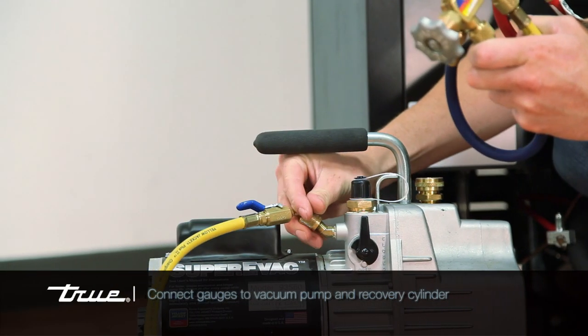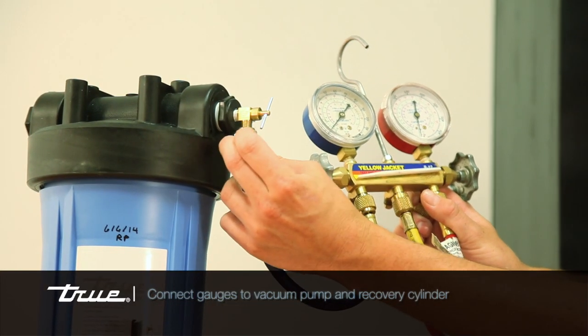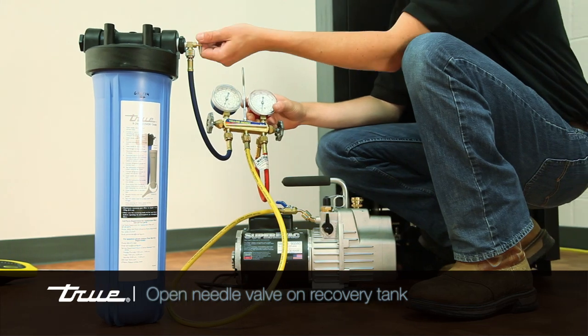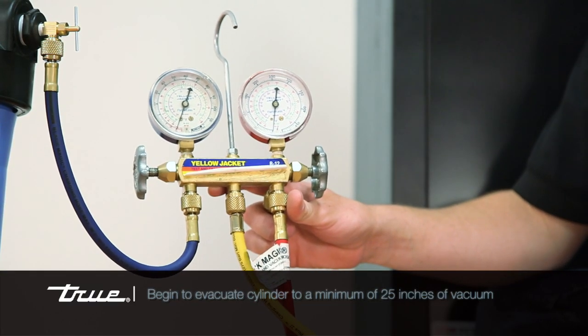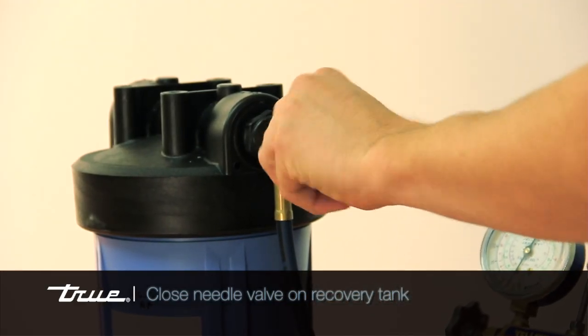Connect your refrigeration gauges to the vacuum pump and the recovery cylinder. Then open the needle valve on the top of the recovery tank and begin to evacuate the cylinder to a minimum of 25 inches of vacuum. Close the needle valve on the recovery tank.